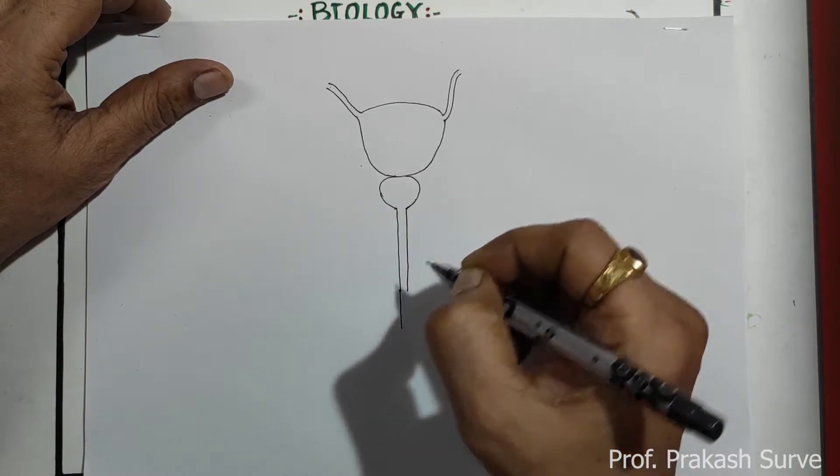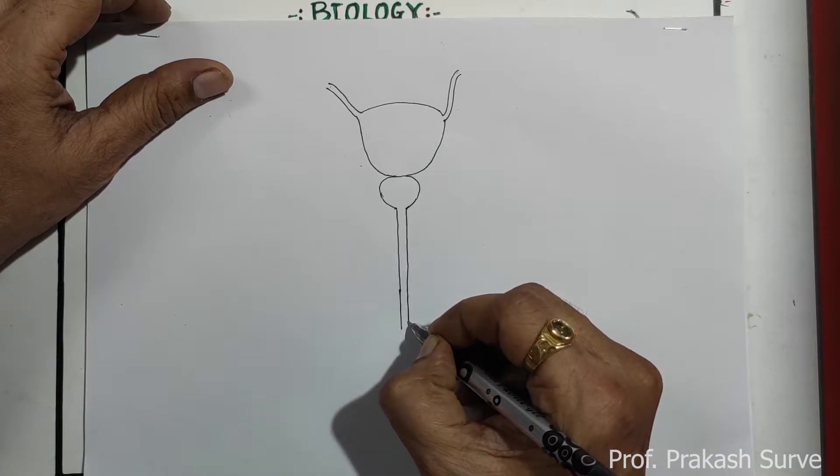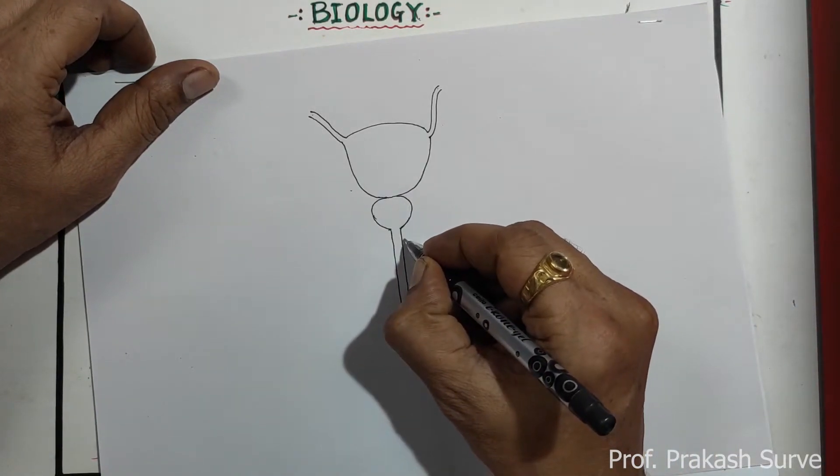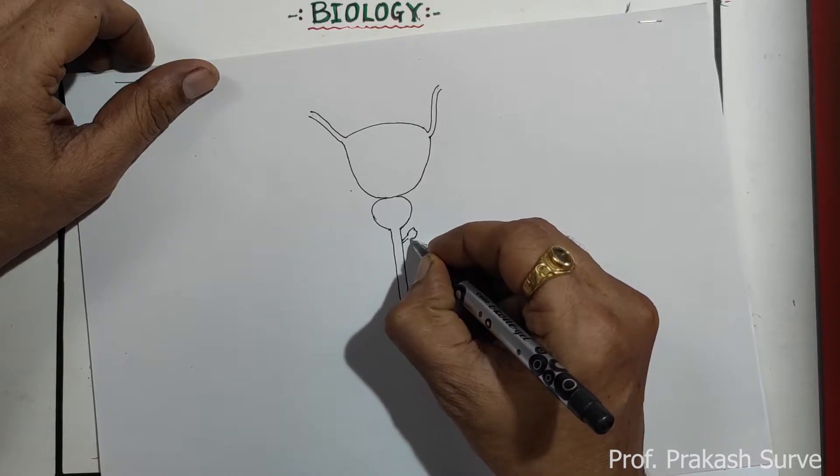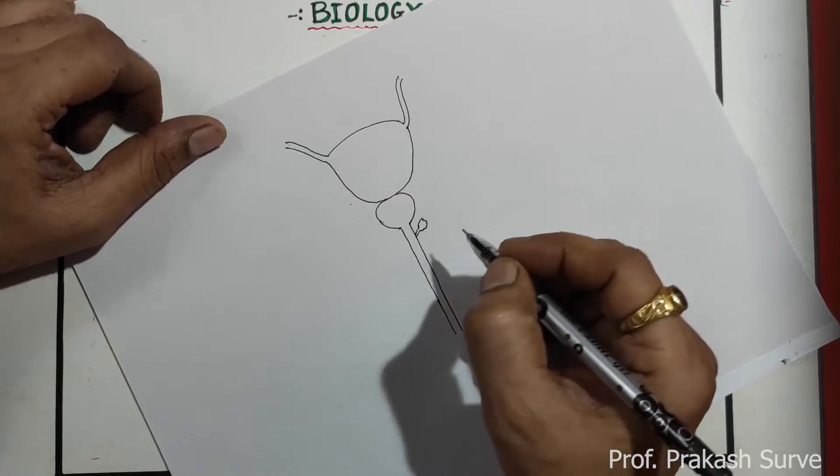This will be the urethra. Now here we'll draw a gland. This is a bulbo urethral gland.